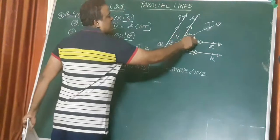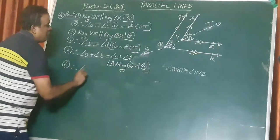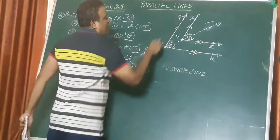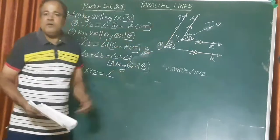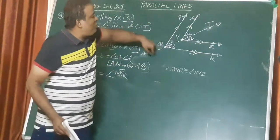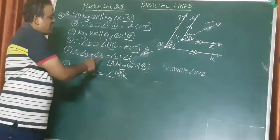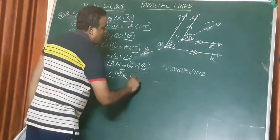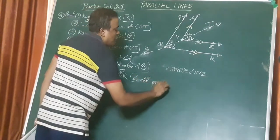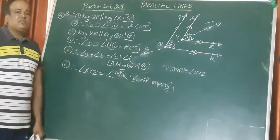What is A plus B? A plus B is angle XYZ. And what is C plus D? C plus D is angle PQR. Therefore, angle XYZ equals angle PQR. You will write here: angle addition property. This is the second method.